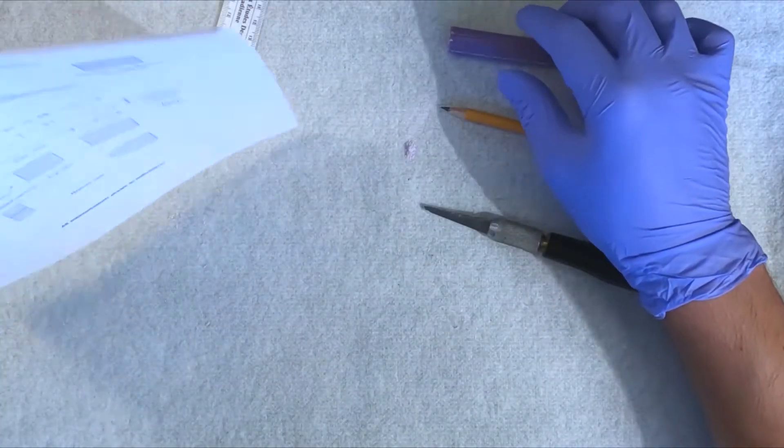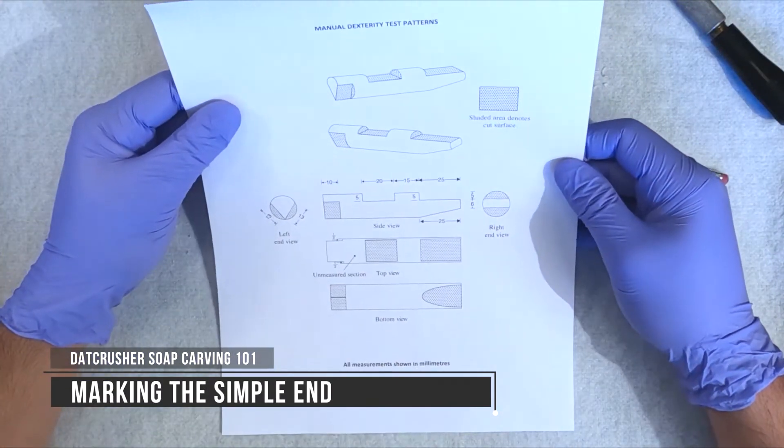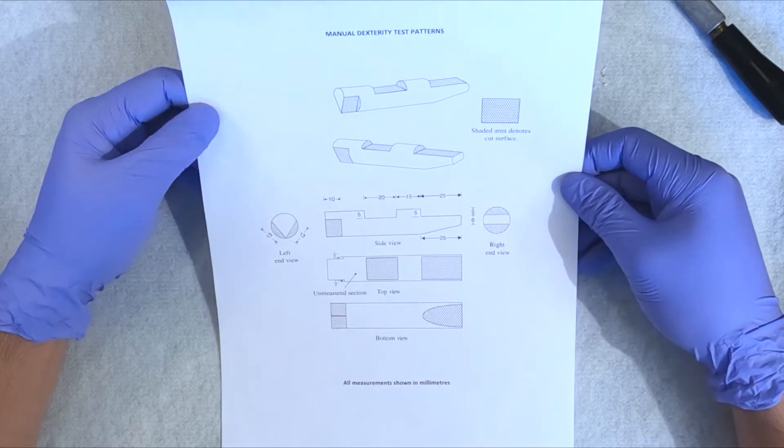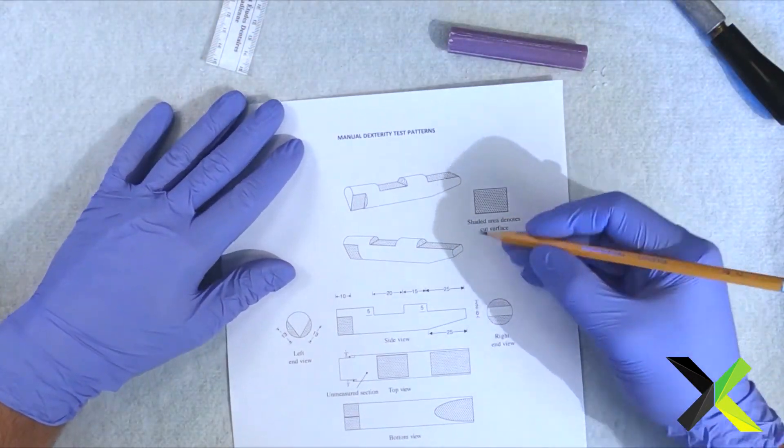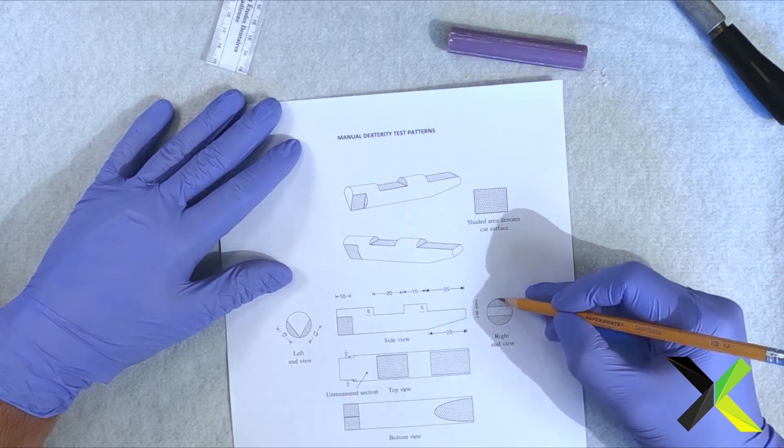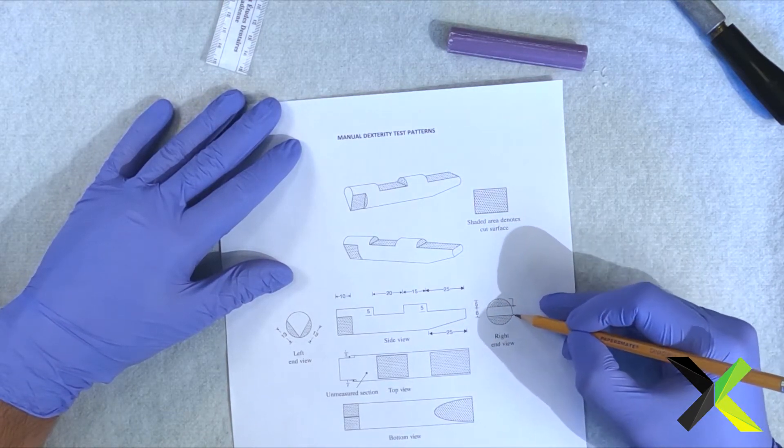Okay, so we have to look at our pattern and make sure we know what we're doing. So this distance, let's grab a pencil, this distance right here is five from the top. Five from the top. That's five, that's five.